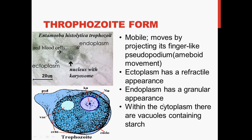The trophozoite form is mobile and can move. It moves by projecting its finger-like pseudopodium, exhibiting an amoeboid movement. The ectoplasm has a refractile appearance. Ectoplasm comes from Greek — 'ectos' meaning outside and 'plasma' meaning something being formed or molded.